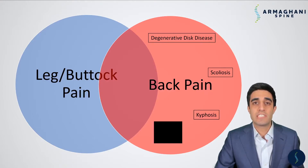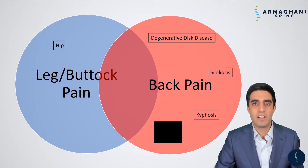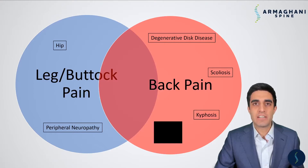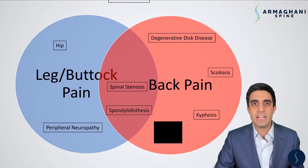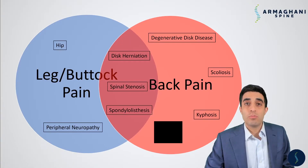Conditions that can cause purely leg and buttock pain include hip arthritis or peripheral neuropathies. But some conditions cause both back pain and leg and buttock pain. Those spine conditions include spinal stenosis, lumbar spondylolisthesis, as well as disc herniations. Today we'll be discussing lumbar disc herniations.